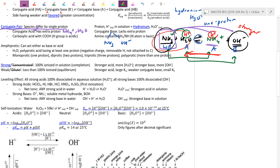Be careful when defining amphiprotic: don't say it has to be a neutral or charged molecule — sometimes it is charged, sometimes neutral. Use the terminology 'species' — a chemical that can behave as acid or base depending on what it's mixing with. It could be water or something that's polyprotic.